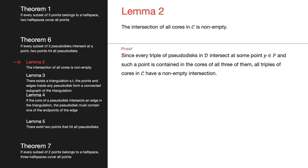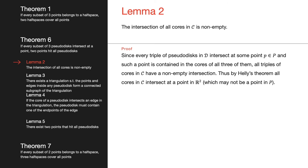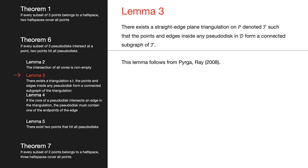Proof. Since every triple of pseudodisks intersects at some point in our set, and such a point is contained in the cores of all three pseudodisks, all triples of cores in C have a non-empty intersection. By Helly's theorem, this means all cores must intersect at a point in the plane, though this point may not necessarily be in our set of points P.